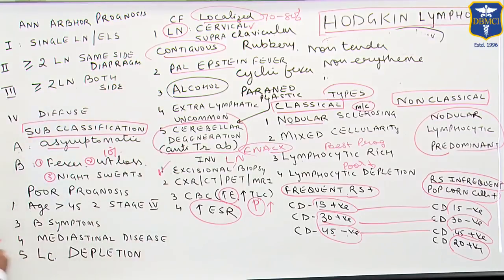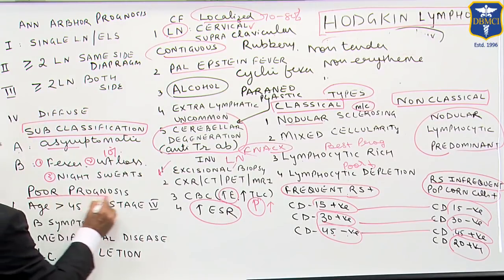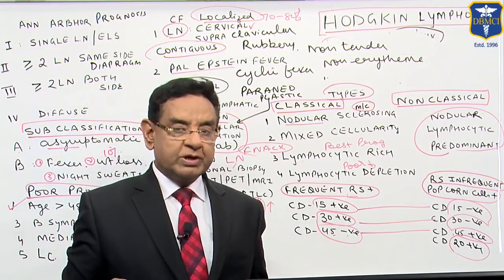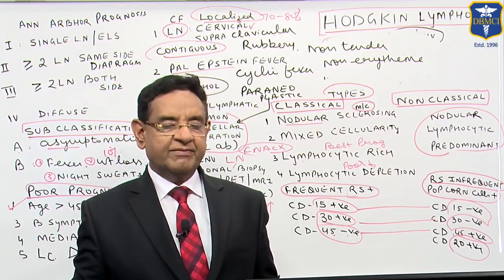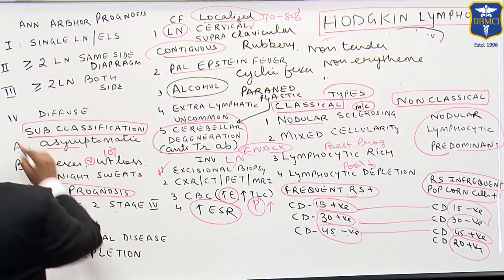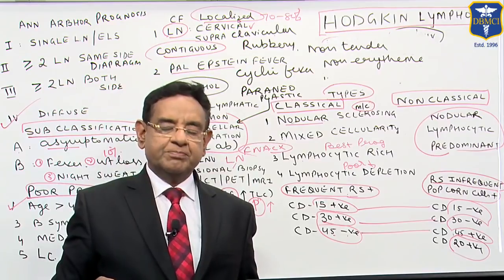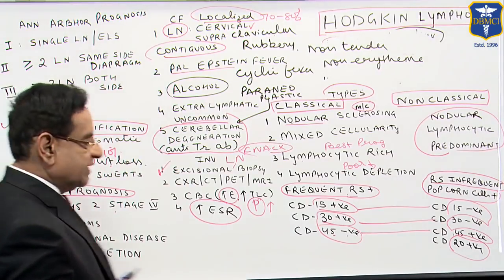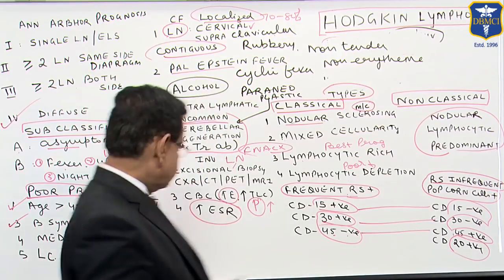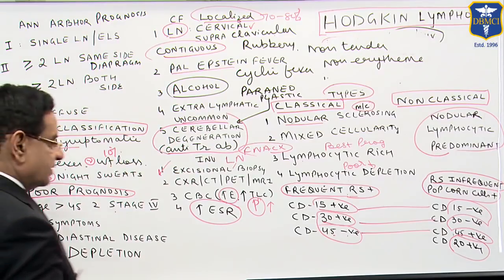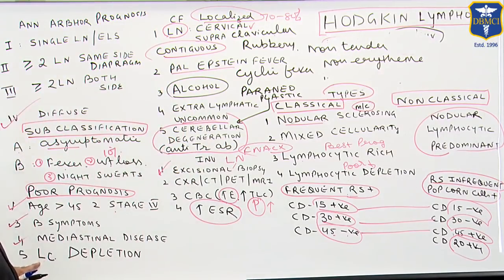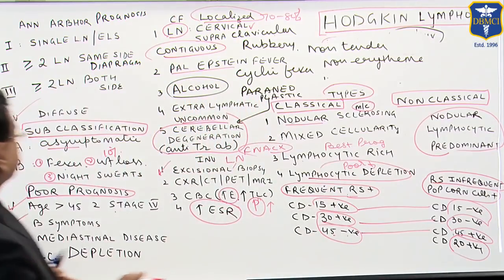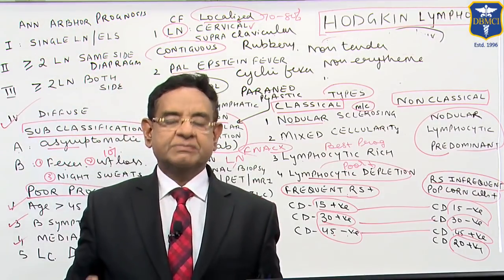Poor prognostic features include age above 45 years — remember the bimodal presentation, so patients presenting later have poor prognosis. Stage 4 diffuse disseminated disease carries poor prognosis. B symptoms such as fever, weight loss of more than 10 percent, and night sweats indicate poor prognosis. A mediastinal mass is also a poor prognostic sign. The lymphocytic depletion variety has the worst prognosis. Ann Arbor staging is essential for determining prognosis.